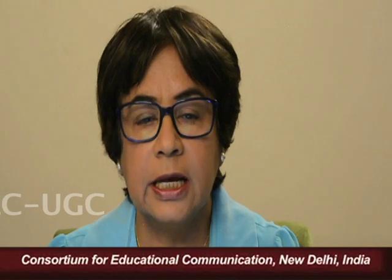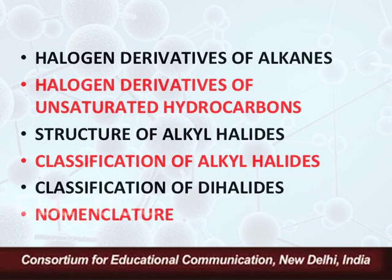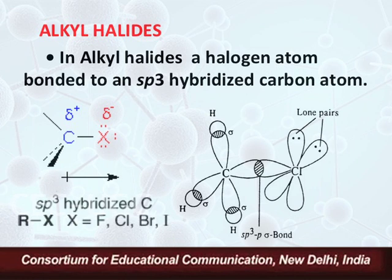Alkyl halides are examples of organic halides. Organic halides are derivatives of hydrocarbons, obtained by replacing hydrogen atoms of hydrocarbons. Depending on the structure of the hydrocarbon, halogenated organic compounds are of three types: halogen derivatives of saturated hydrocarbons, known as alkyl halides; halogen derivatives of unsaturated hydrocarbons; and halogen derivatives of benzene, known as aryl halides.